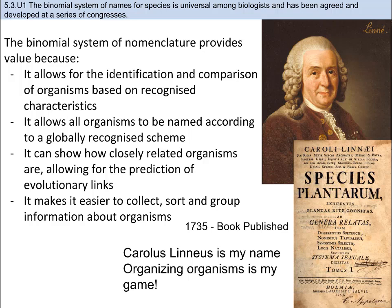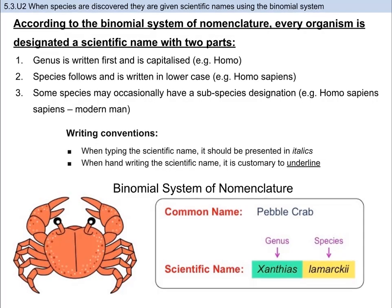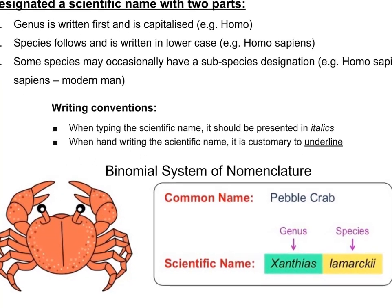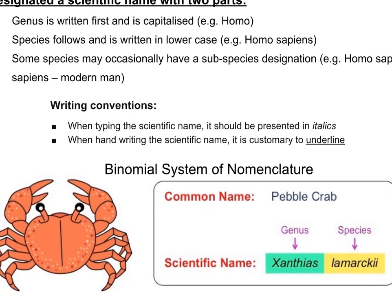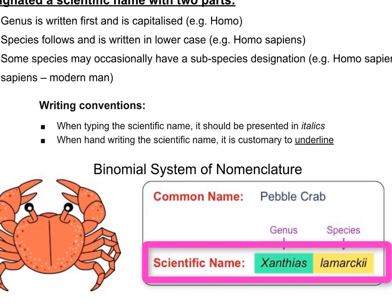Let's break down that system — I bet you're already familiar with some parts of it. When organisms are discovered, they are given two names: a common name and a scientific name. In the picture, the pebble crab is the common name. However, depending on translation or location, this might not be called a pebble crab, which makes it confusing. The scientific name for the pebble crab is Xanthius lamarckii.